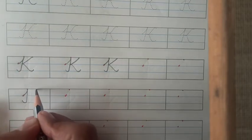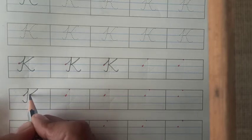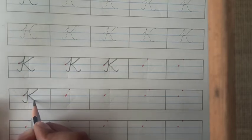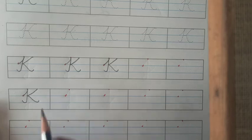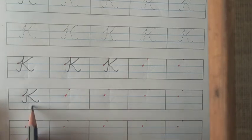Then keep your pencil on first line and make a slanting line then again make a slanting line and make a curve. Capital cursive K.